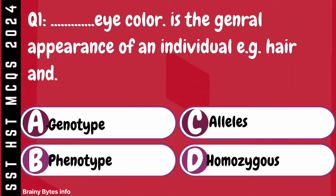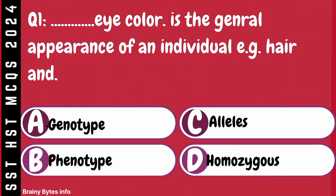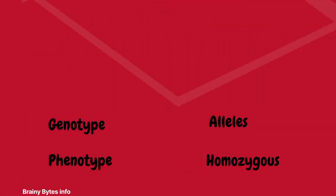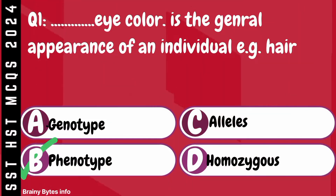Question 1. Eye color is the general appearance of an individual, e.g. hair. A. Genotype. B. Phenotype. C. Alleles. D. Homozygous.